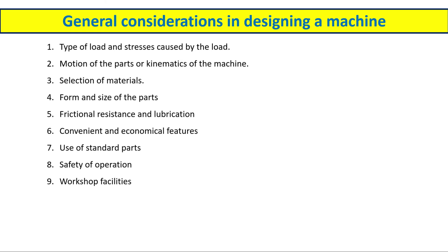The next consideration is workshop facility. We need to be well aware of which machines and processes we already have at our factory or workshop. Based on that, we need to design and manufacture the component, because it will save cost. If you go to a supplier for different machines, it will cost more.